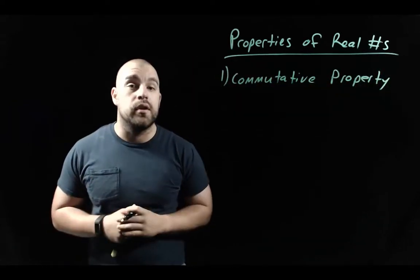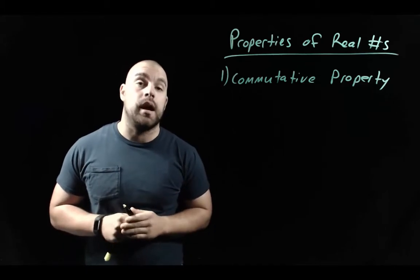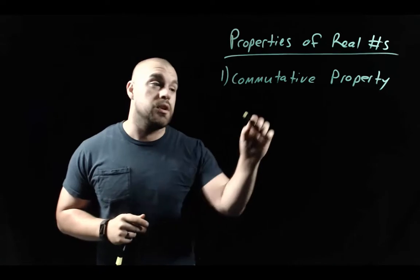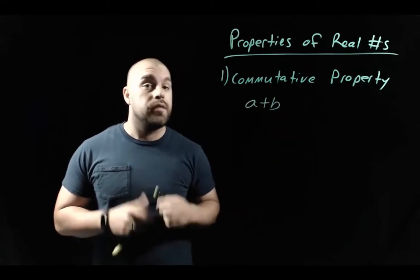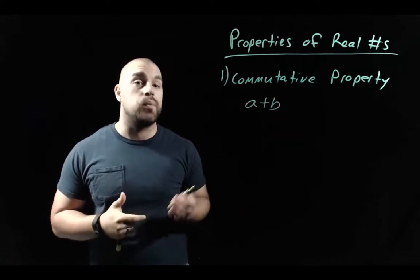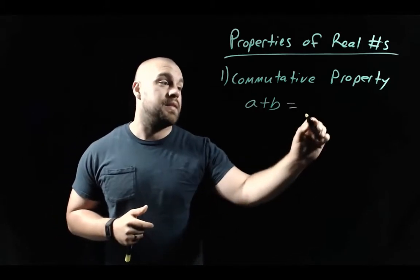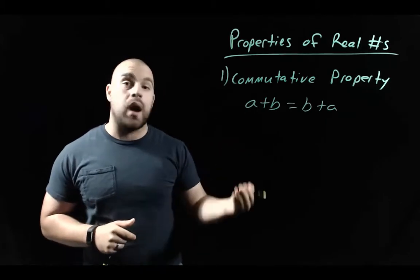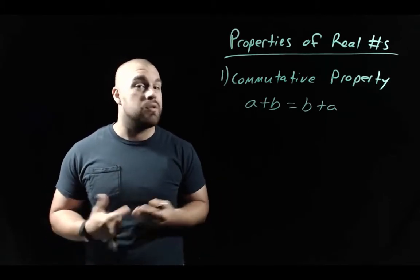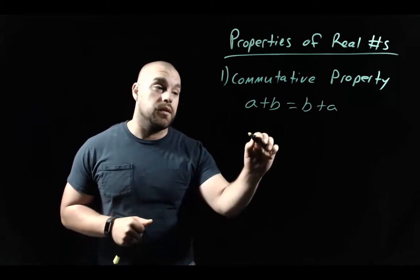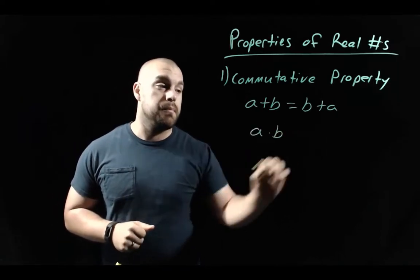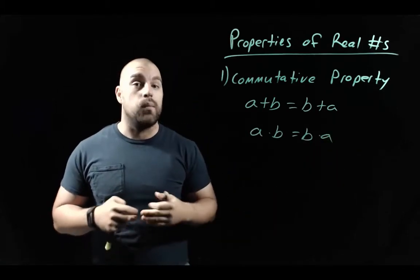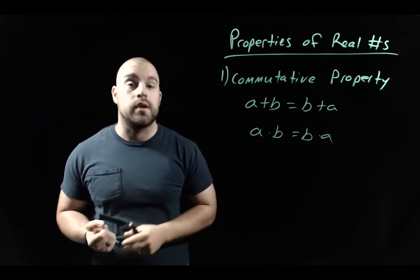There's a commutative property for both addition and multiplication. In general terms: if we had a plus b, the commutative property says the answer is the exact same as b plus a. So when we're adding things together, the order does not matter. Similarly with multiplication, a times b gives the same answer as b times a — the order does not matter when multiplying two numbers.